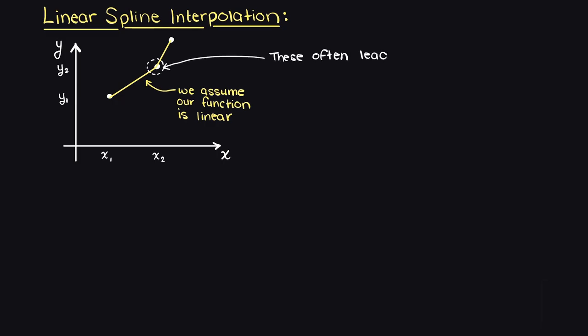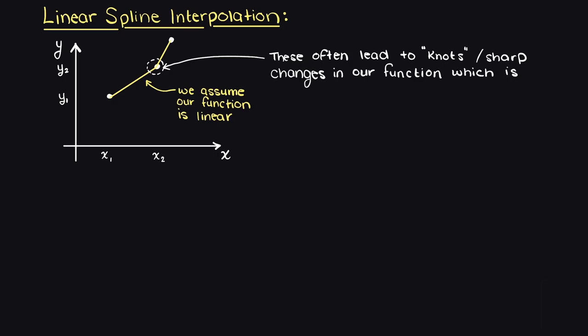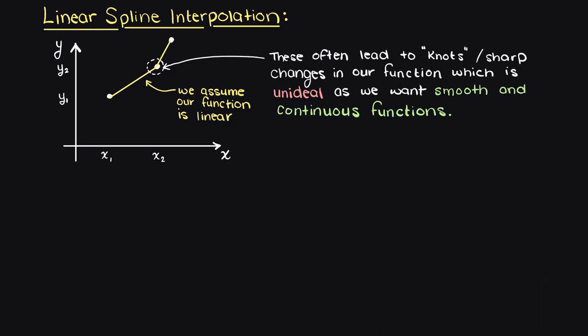As you can see, we usually get these unwanted sharp changes in our function, and you may see these called knots. These are unideal and why cubic splines are much more commonly used. However, these will be the subject of our next numerical methods theory video.